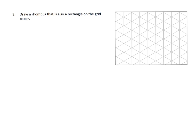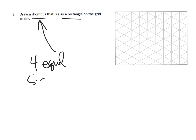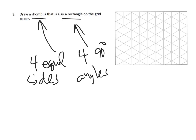This is similar to the last problem: draw a rhombus that's also a rectangle. A rhombus has four equal sides and a rectangle has four 90-degree angles, so that's going to be a square. I'll draw a square with four equal sides and four 90-degree angles.